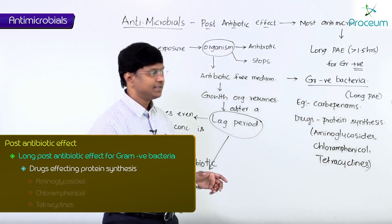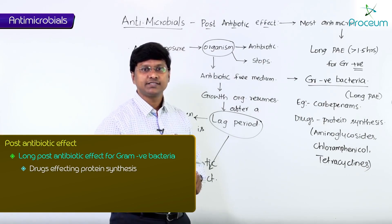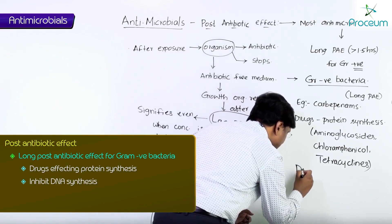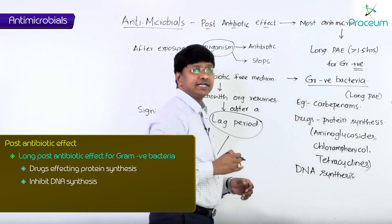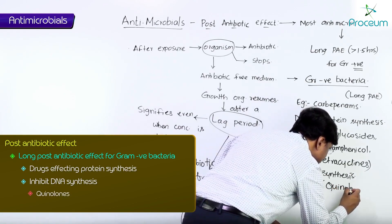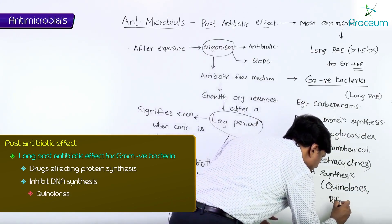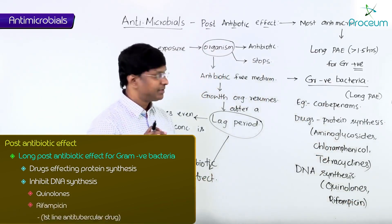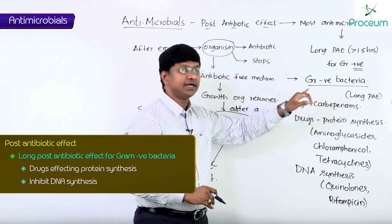The other group of antibiotics with long post-antibiotic effect against gram-negative bacteria is those which inhibit DNA synthesis. These include quinolones and rifampicin, which is a first-line anti-tubercular drug. So remember these groups of antibiotics have long post-antibiotic effect against gram-negative bacteria.